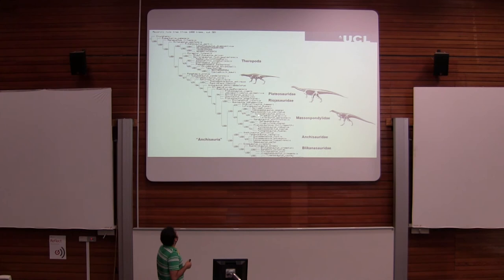Plateosaurids are here, and what is interesting is that although they are always considered quadrupedal, quadrupedality would have started appearing earlier — the riohazaurids would have started to develop quadrupedality as a convergence compared to the other groups. The bipedal forms also appear over here.